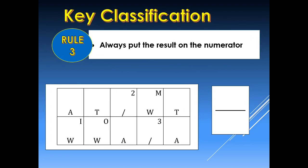The last rule of key classification is that the result will always be placed in the numerator, or above the classification line, regardless of which finger is used. So even if the key is taken from block 6 through block 9, we still place the result of the key classification on the numerator or above the classification line.